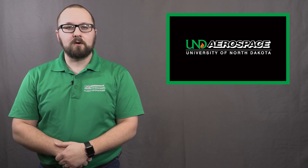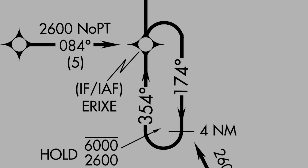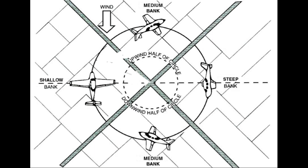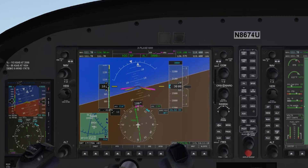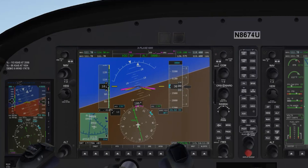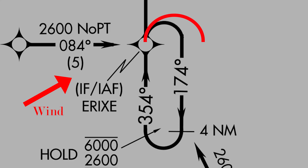In order to figure out what shape the hold will actually be, let's think about how ground speed will affect the radius of our standard rate turn. If we have a higher ground speed on the outbound turn, that means the radius will be bigger. If we think back to turns around a point, we adjust for ground speed with bank angle, which changes the rate of turn. With holding, we are unable to change the rate at which we turn, so we must compensate by changing the shape of the hold. We end up correcting for the larger radius by changing the heading of the outbound leg.